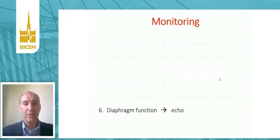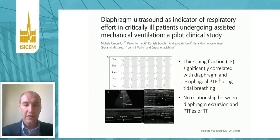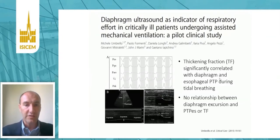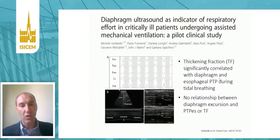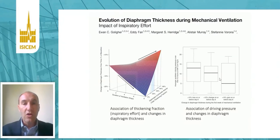It is extremely important to monitor diaphragm function, and this can be done with ultrasonography. An Italian paper showed that the thickening fraction of the diaphragm is a simple, reproducible parameter easily measured at the bedside, significantly correlated with diaphragm and esophageal pressure-time product during tidal breathing. Diaphragm excursion during inspiration, however, is not related to the work of breathing and is not correlated with esophageal pressure swings or the thickening fraction. The thickening fraction is also associated with changes in diaphragm thickness and with driving pressure, making it a very simple and easy bedside tool to monitor diaphragm function.